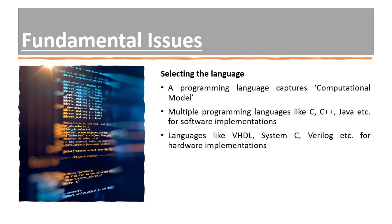A model can be captured using multiple programming languages. Languages like C, C++, and Java can be used for software implementations, while languages like VHDL, Embedded C, and Verilog can be used for hardware implementations. It is necessary to choose the language best suitable for the model. For example, C++ is a very good language for capturing an object-oriented model. The only prerequisite in selecting a programming language is that the language should be able to capture the model easily — you should not complicate the model by using a complicated programming language.